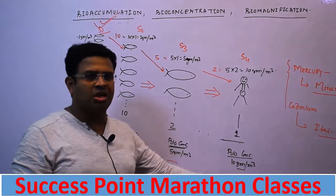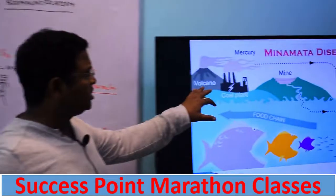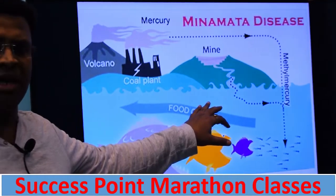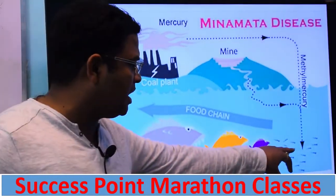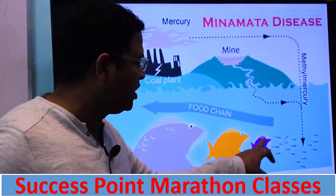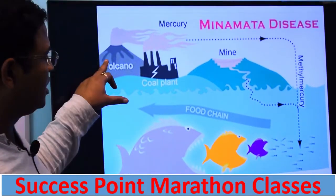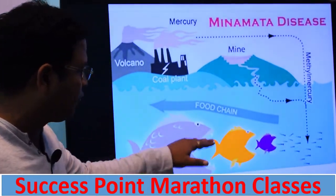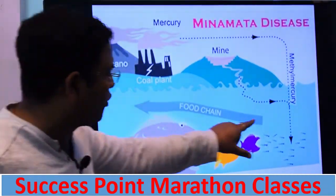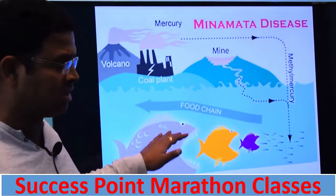Because the bioconcentration in the food chain keeps on increasing — from 0.1 to 1 gram, then 5 gram, then 10 gram — that increasing trend is known as biomagnification. A real-world example is from Japan: mercury entered the sea through industries, reacted with methane to form methylmercury, was eaten by fish causing bioaccumulation, and through increasing bioconcentration at each level, eventually reached human beings — this is biomagnification.